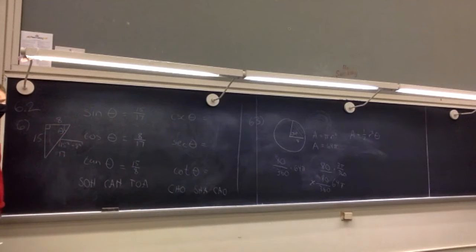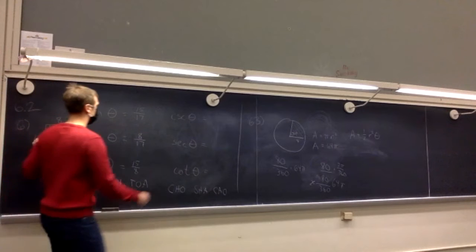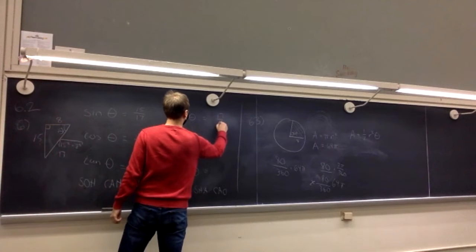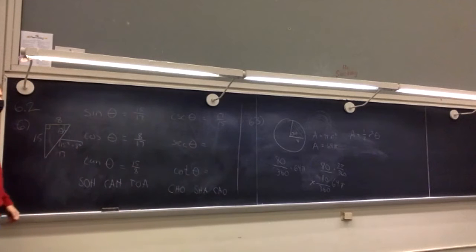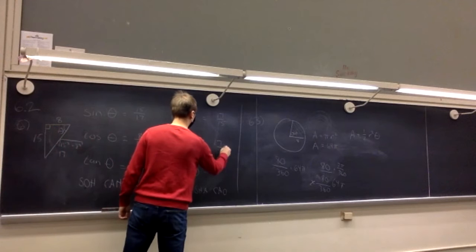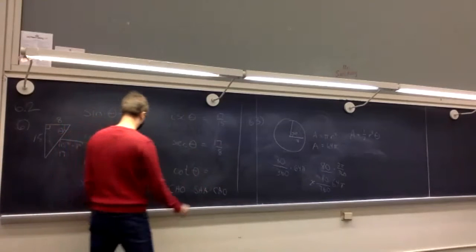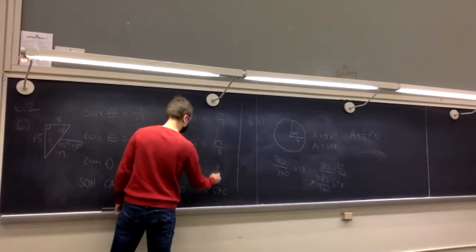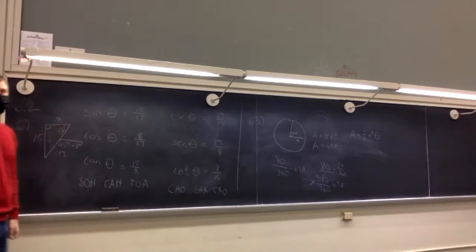CHOSHACAO: cosecant is hypotenuse over opposite — 17 over 15. Secant is hypotenuse over adjacent. Cotangent is adjacent over opposite. Or equivalently, these are the reciprocals of the first three trig functions.